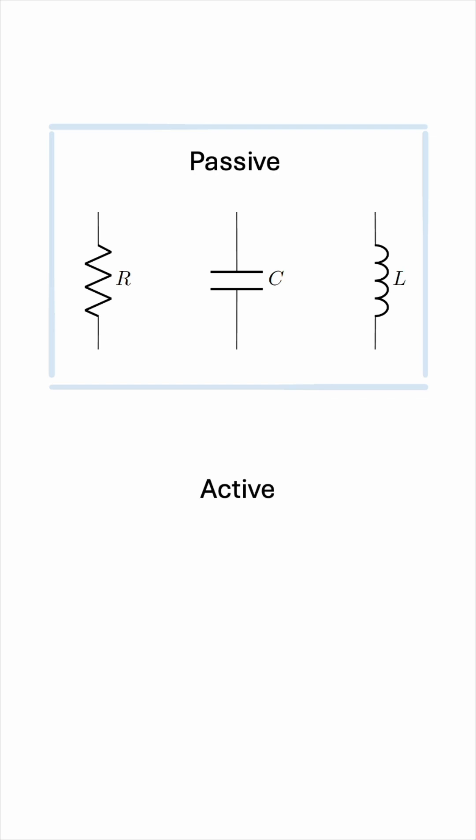Active elements, on the other hand, are capable of generating energy. The most important examples are voltage and current sources. Whether independent or dependent, these ideal sources do a good job at approximating practical generators and batteries, for example. These generally deliver power to the circuit connected to them.